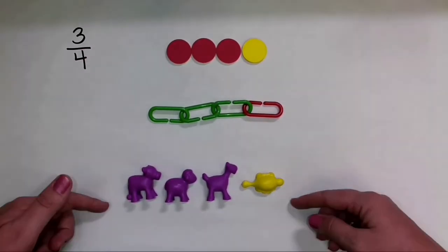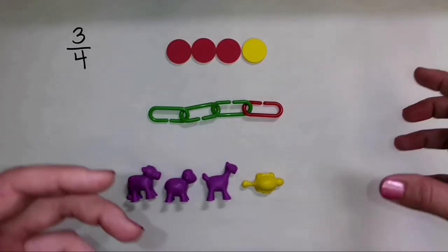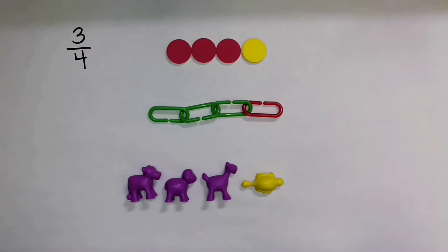All of these represent the set model because I have a set of objects. And then if I change part of that set, I can show part of the fraction.